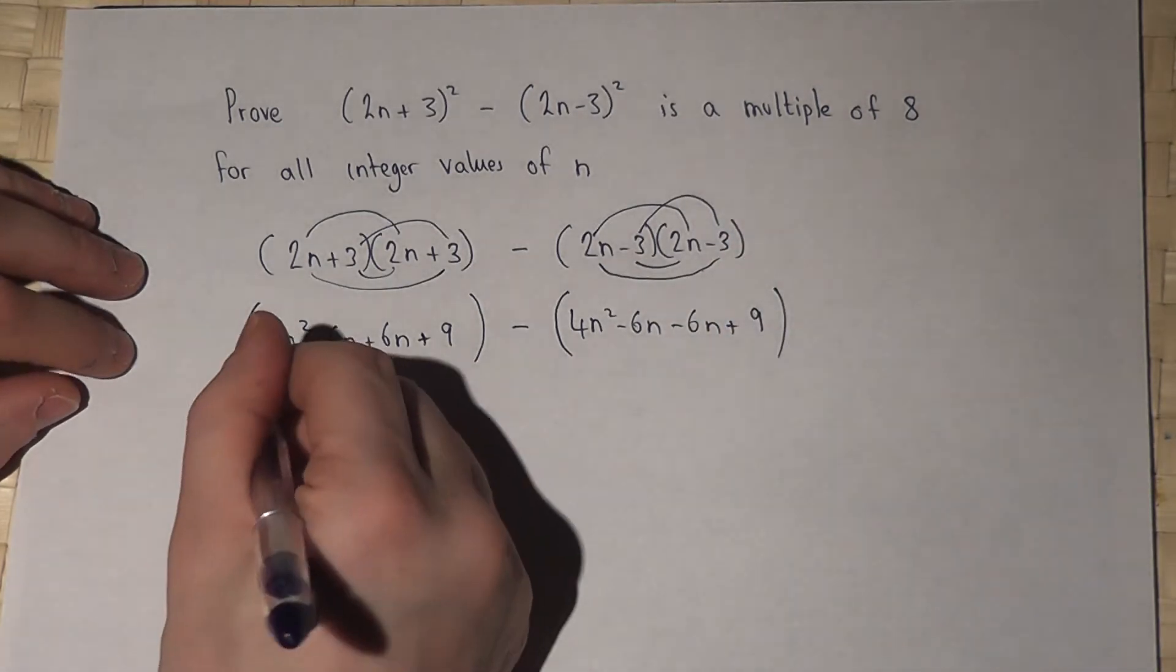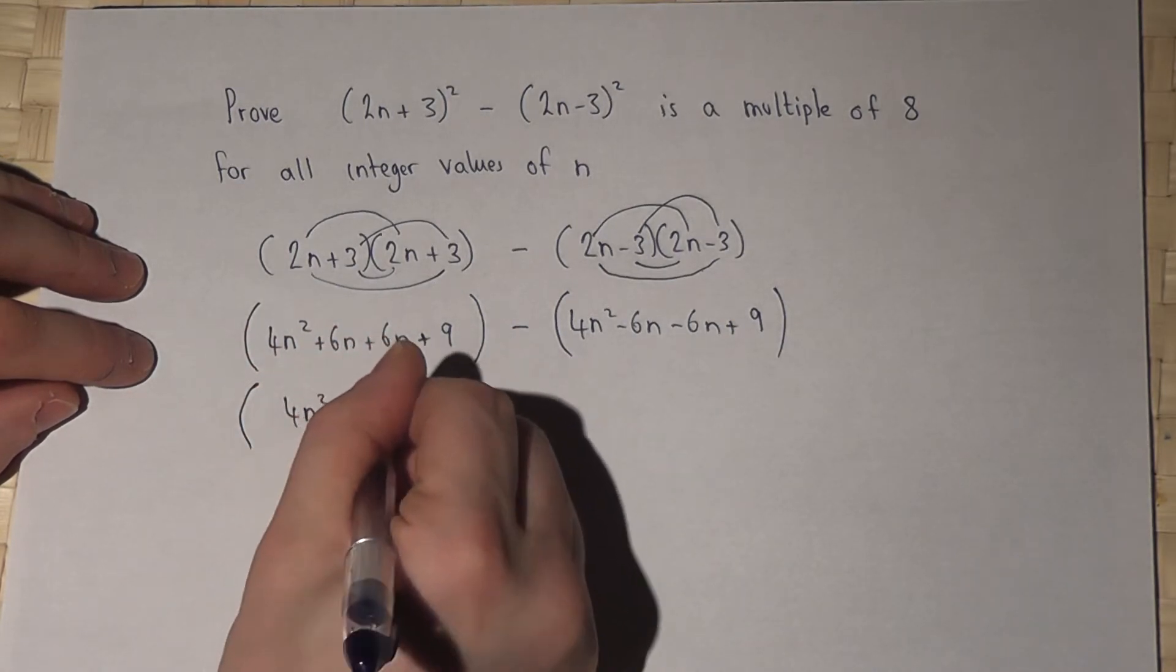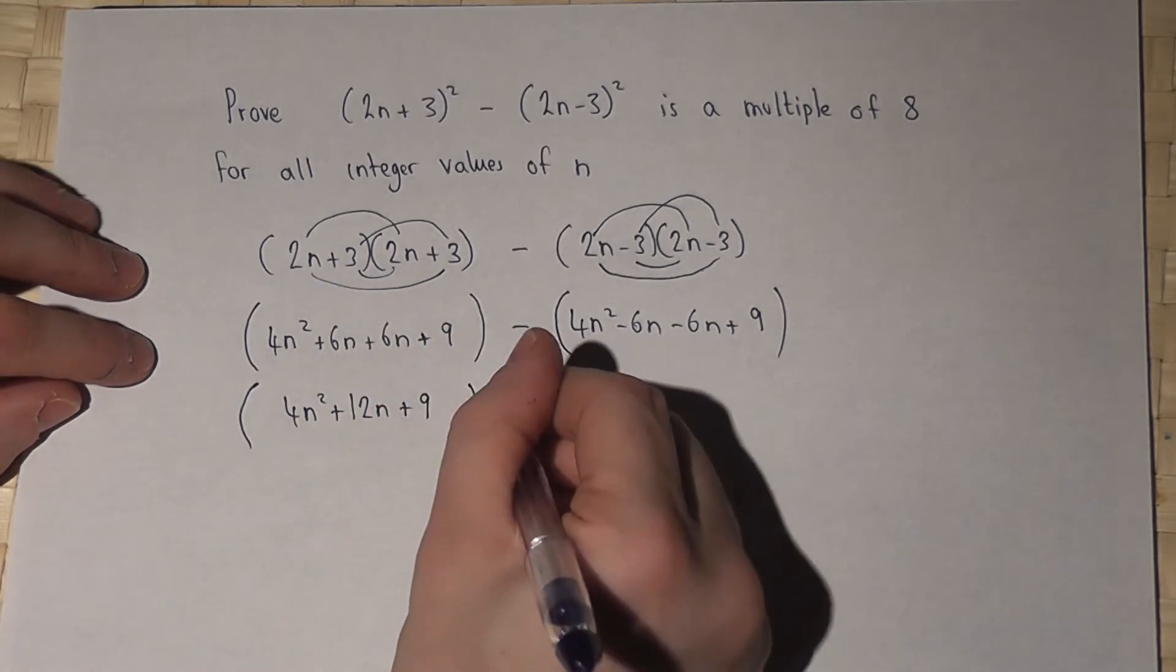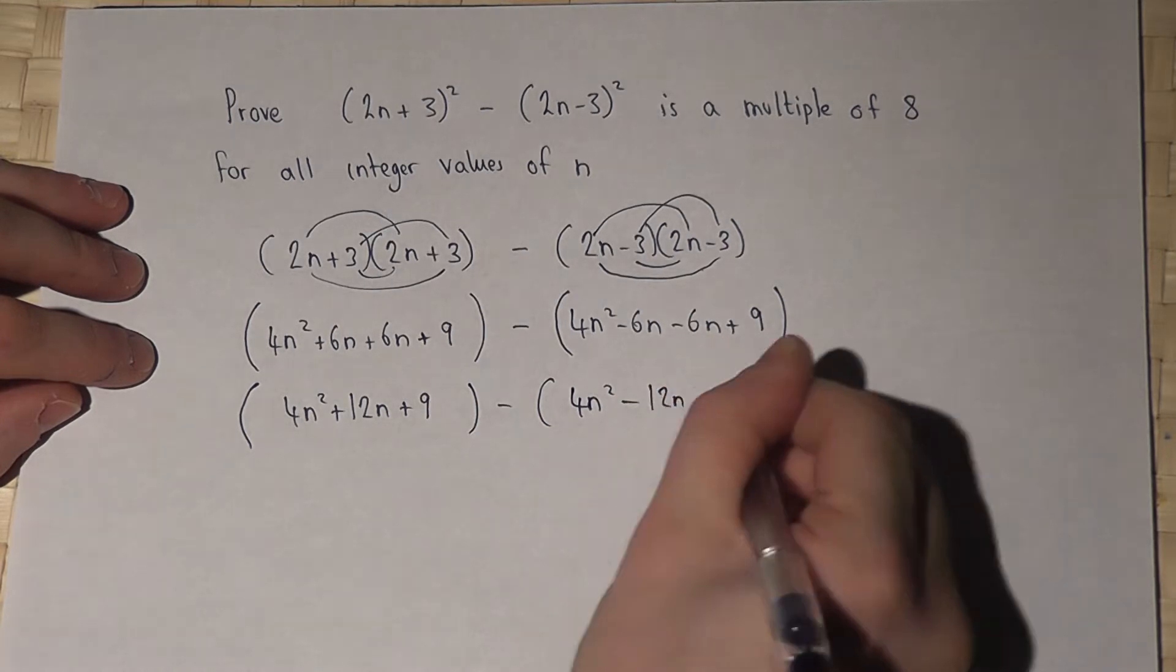I can now simplify, so 4n squared plus 12n plus 9, take away 4n squared, take away 12n, plus 9.